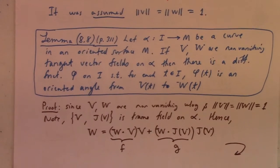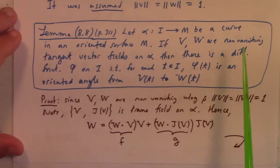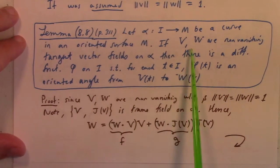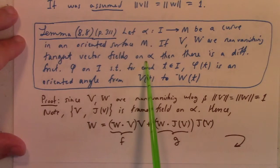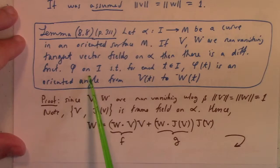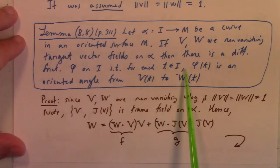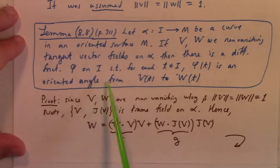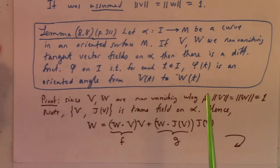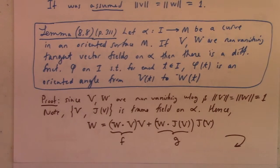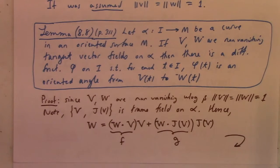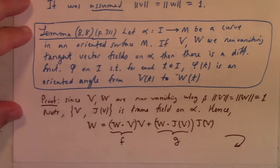So here's a lemma. Alpha be a curve on an oriented surface M, v and w non-vanishing tangent vector fields on that curve. Then there's a differentiable function φ on i, such that for each t in i, φ of t is an oriented angle from v of t to w of t. In other words, you can compare the angle between vector fields along a curve in a surface.